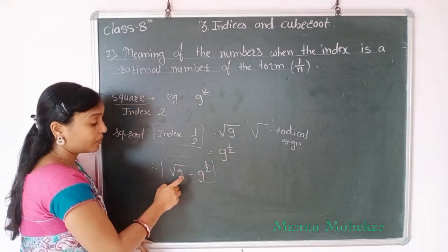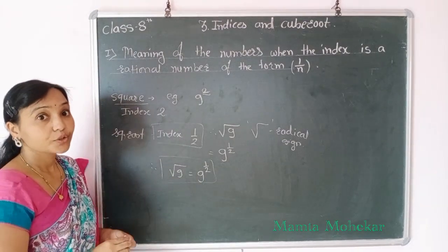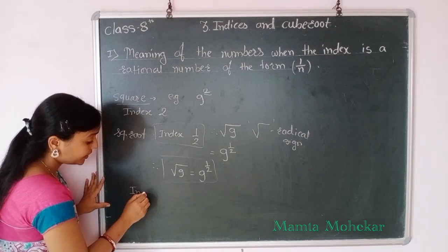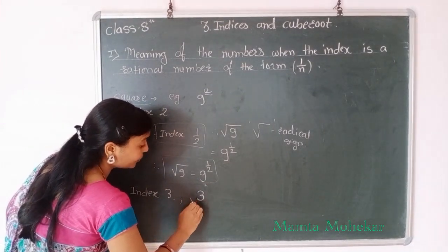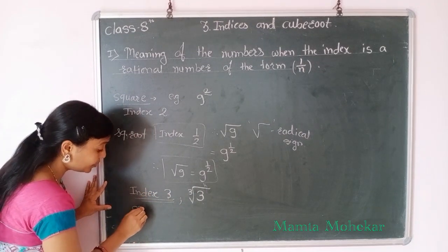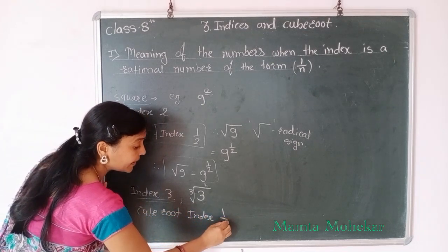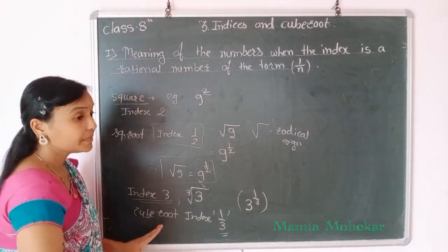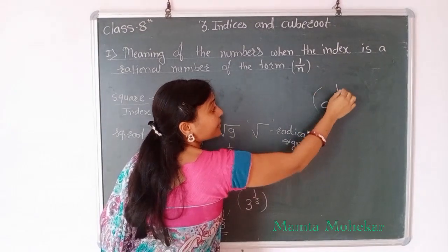Similarly, we write down the cube root of any number. For example, the cube root of 3: if showing the cube we use index 3, but if we want to show cube root then the index is 1 by 3. So 3 raised to power 1 by 3 is the cube root of 3. Similarly, the nth root of A is written as A raised to power 1 by n.